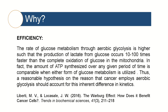Let's start with efficiency. I've taken this explanation from a study by Liberti and Locasale in 2016, and this is a direct quote from their study: basically, they found that the rate of glucose metabolism through aerobic glycolysis is higher, such that the production of lactate from glucose occurs 10 to 100 times faster than the complete oxidation of glucose in the mitochondria. In fact, the amount of ATP synthesized over any given period is comparable when either form of glucose metabolism is utilized. Thus, a reasonable hypothesis on the reason that cancer employs aerobic glycolysis should account for the inherent difference in kinetics. Basically, this is saying that the glycolysis pathway is a more efficient mechanism overall for cancer cells to make ATP because it is a significantly quicker pathway than oxidative phosphorylation.